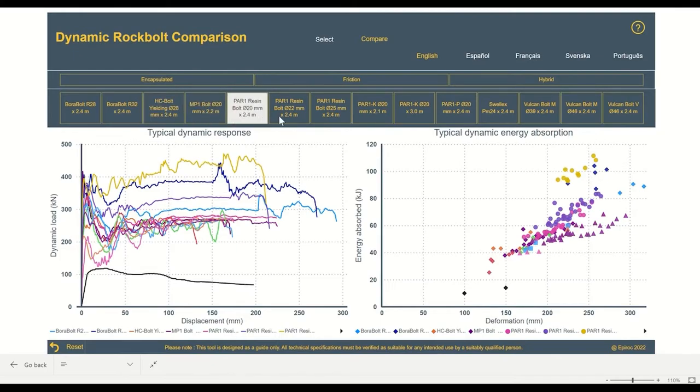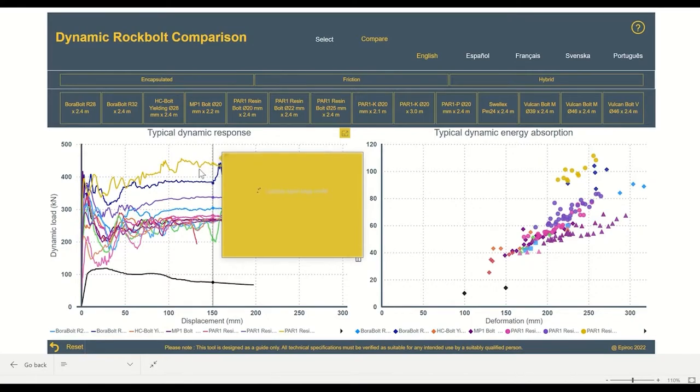Below that, there's a list of the different bolting options. At the moment, we haven't selected anything, and we have these two graphs below, which have a whole load of information on them. The first graph is our typical dynamic response graph. This is the dynamic load and deformation that we'd expect each of these bolts to provide under a dynamic impact event.